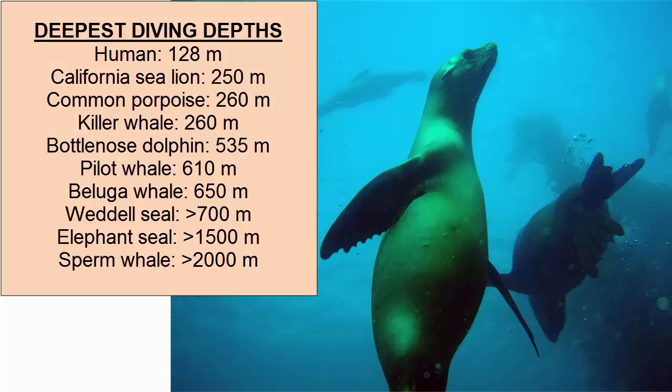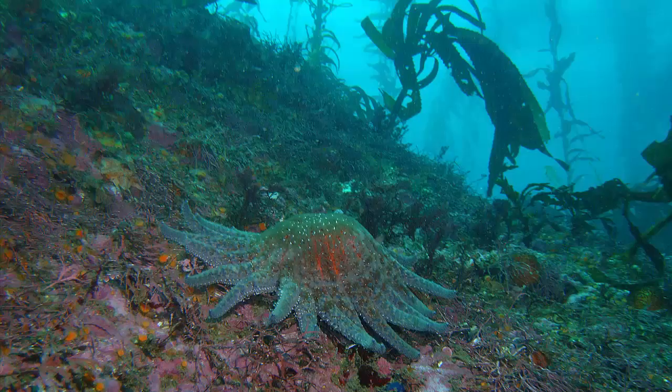Marine mammals breathe air and have lungs, yet due to their unique abilities to store oxygen in hemoglobin and myoglobin and collapse their rib cages, they can hold their breath for long periods of time and have been known to dive to depths exceeding two kilometers.